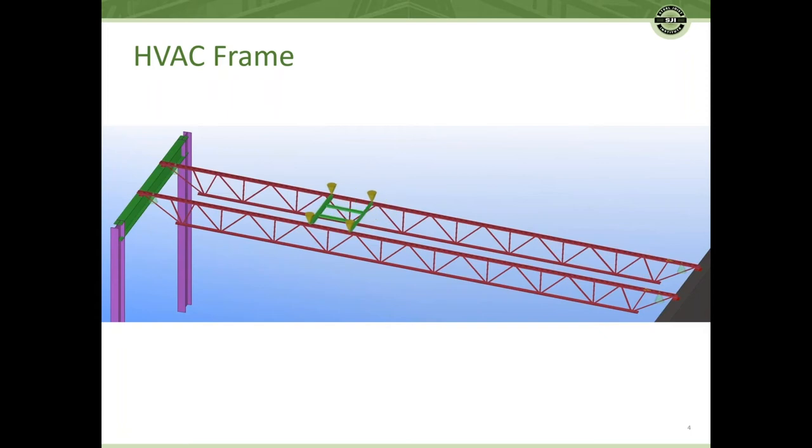the Open Web Steel Joist industry uses what we call an add load. The magnitude of the add load should be sufficient to create the worst case loading condition for both the top and bottom cords and all the webs.